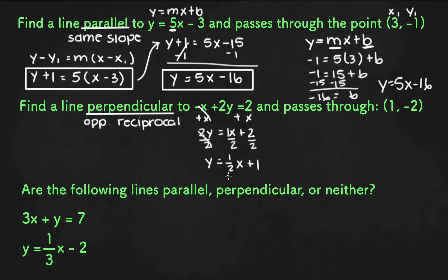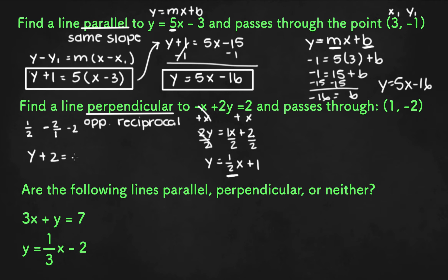To find a line perpendicular, we need the opposite reciprocal slope. The opposite of positive is negative, and the reciprocal of one-half is 2 over 1, so the perpendicular slope is negative 2. Now we have the slope and a point, so we can write the equation in point-slope form: y plus 2 equals negative 2 times x minus 1.